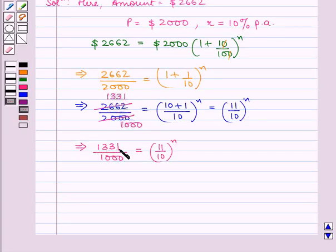As 1331 is the cube of 11 and 1000 is the cube of 10, this implies 11 upon 10 whole cube is equal to 11 upon 10 raised to power n